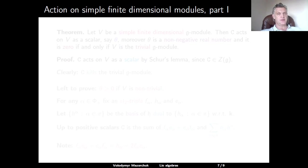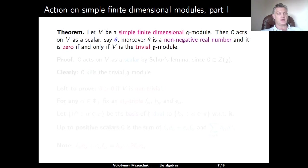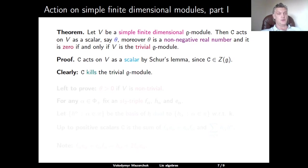The main property of the Casimir element is the following theorem, which we will prove in this lecture. Let V be a simple finite-dimensional G-module. Then the Casimir element C acts on V as a scalar, which we denote by θ. Moreover, θ is a non-negative real number, and it is zero if and only if V is the trivial G-module. The fact that C acts on V as a scalar follows directly from Schur's lemma, because C belongs to the center of the universal enveloping algebra and V is a simple module. Clearly, C kills the trivial module, because it is a linear combination of products of elements in G, and all elements in G kill the trivial module.